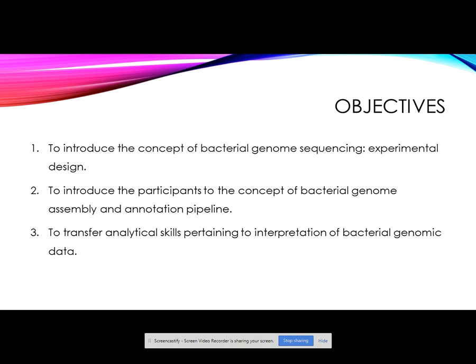Three primary objectives when we teach students: the first is the concept of bacterial genome sequencing and experimental design, both in terms of the lab work which involves DNA extraction, as well as the actual experimental design for genome sequencing. The second concept is the bacterial genome assembly and annotation pipeline, which involves multiple steps students should be cognizant of, as well as sequence quality assessment and annotation.